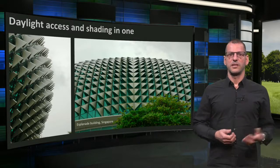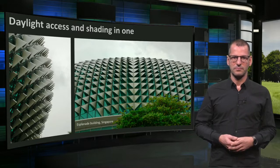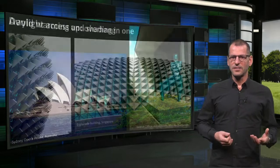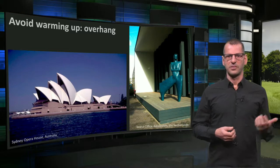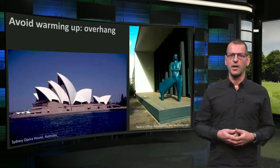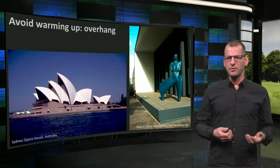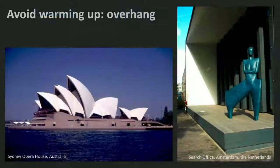The idea of flaps is a similar concept as overhangs, as you can see here with Sydney's Opera House, and even clearer with the building on the right. The protruding overhanging roof avoids direct insulation of the interior, which reduces the cooling demand.